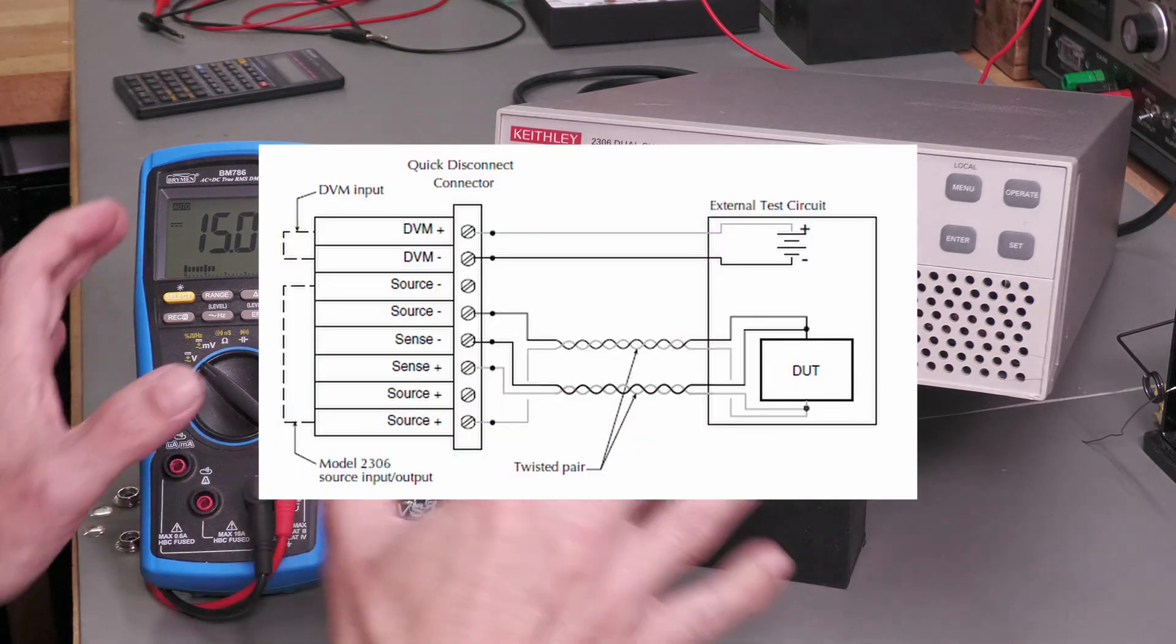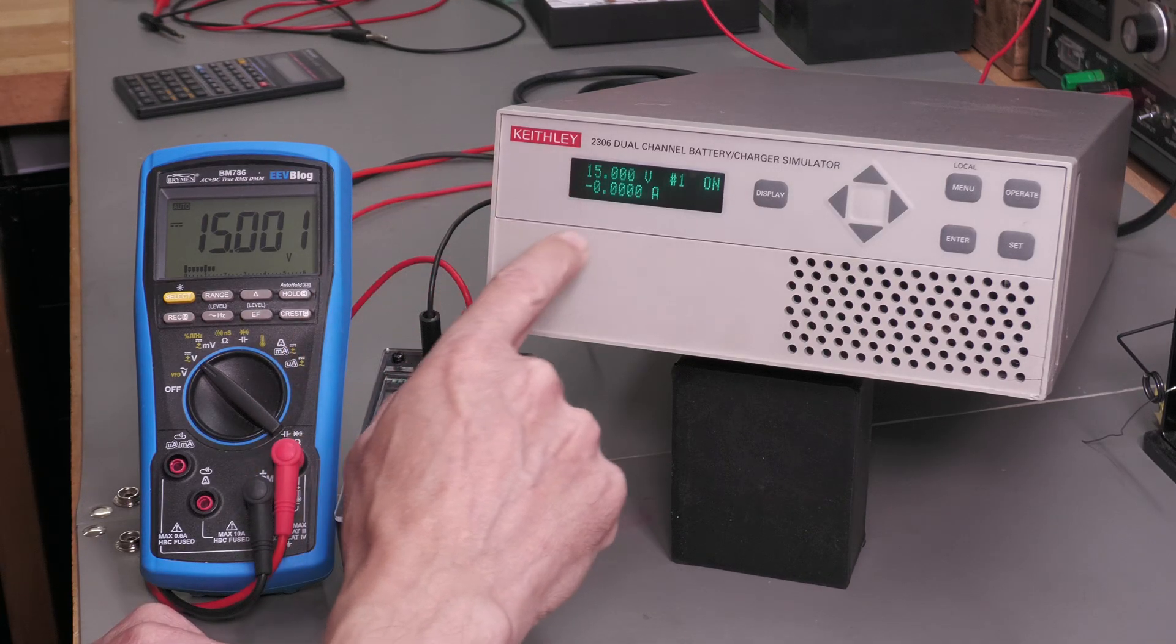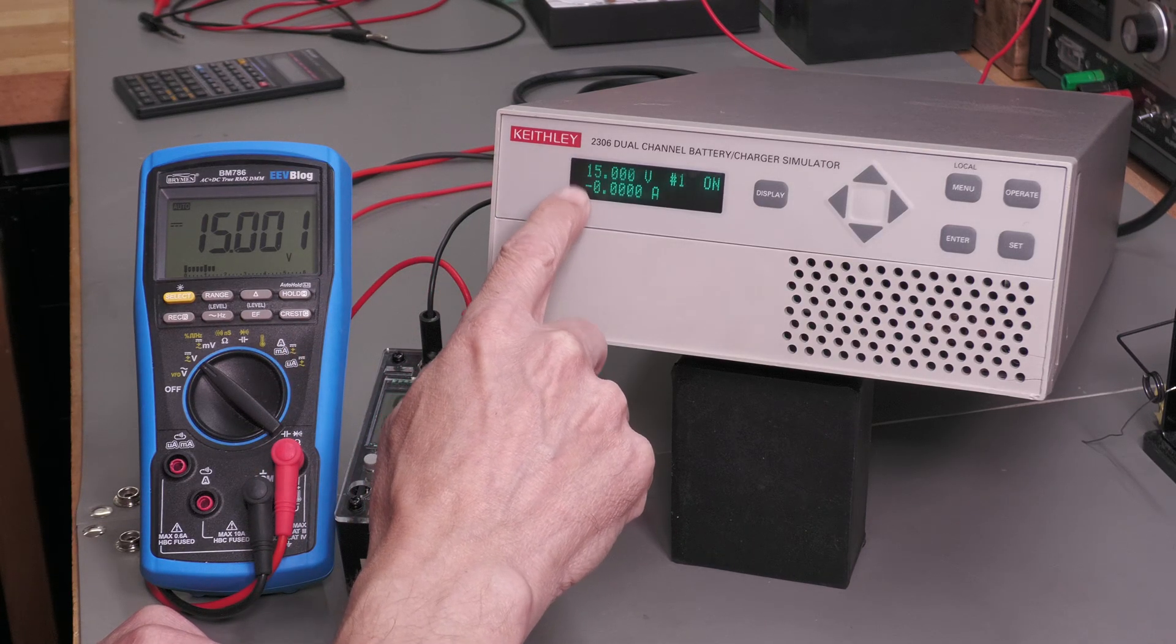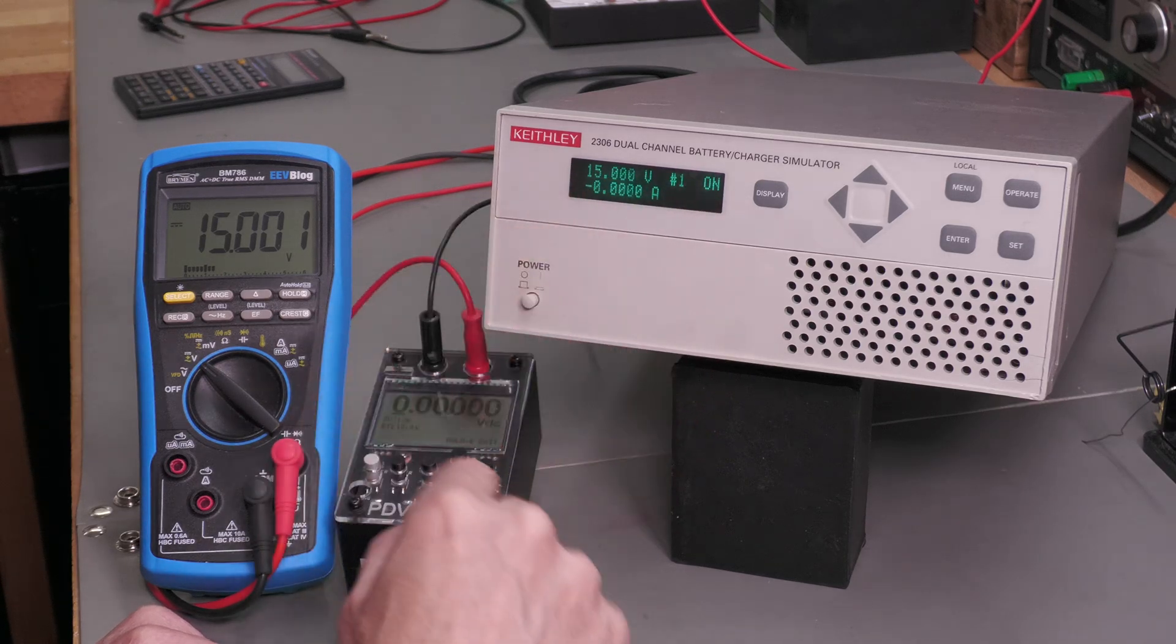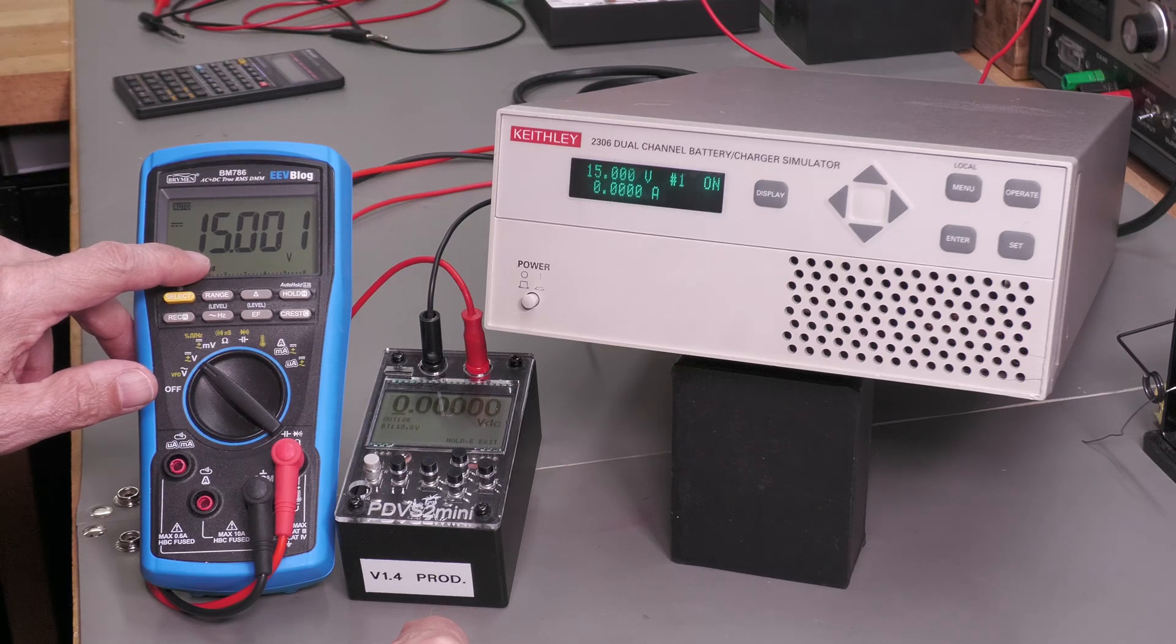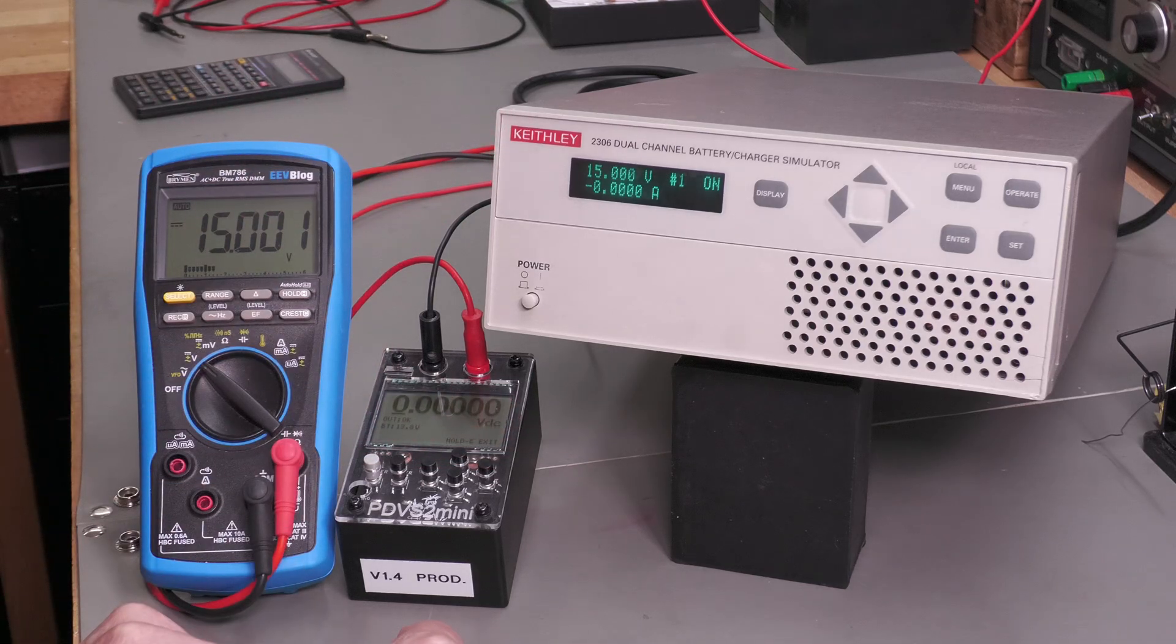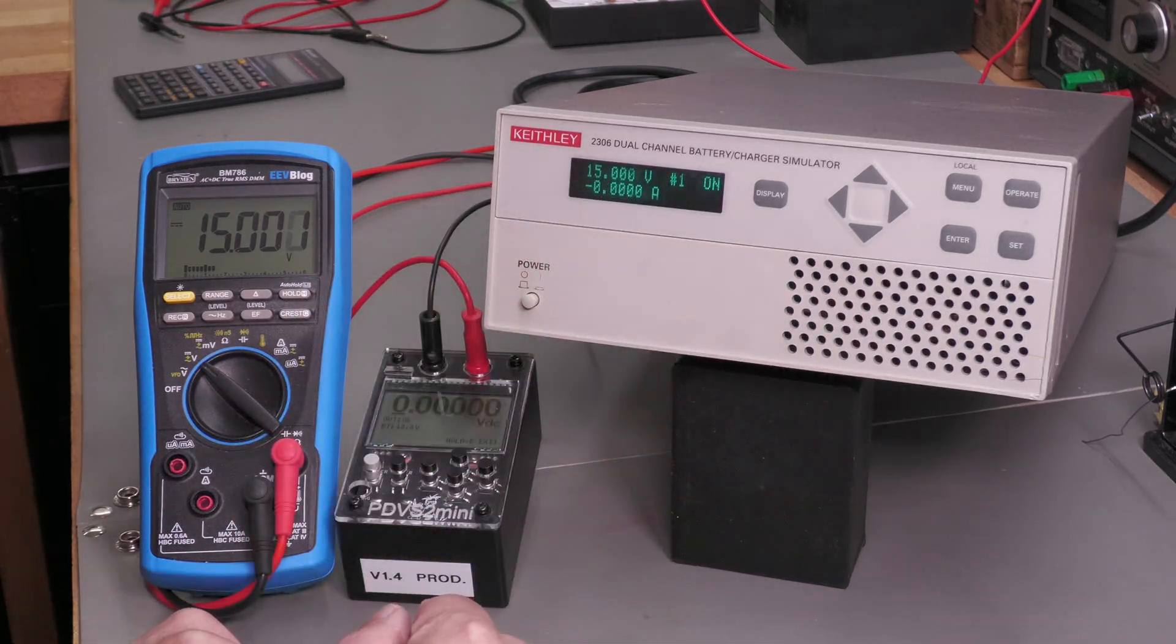So I've got it hooked up to the rear terminals at the back. I've got the power supply set to 15 volts and I've set the maximum current to 5 amps. So it's on at the moment, and you can see 15 volts in the power supply, and I'm getting exactly 15 volts on my BM786 over here. So I'll turn on the electronic load, load up the power supply, just to make sure everything's working there.